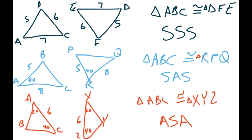So those are the only three cases that prove triangles are congruent: Side-Side-Side, Side-Angle-Side, or Angle-Side-Angle — where the side or angle has to be in between the two others.